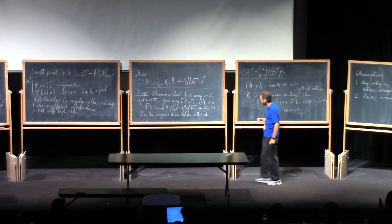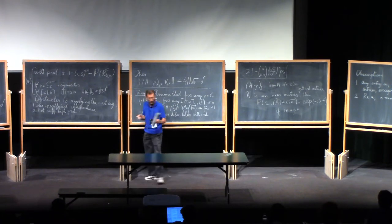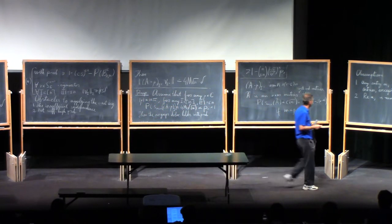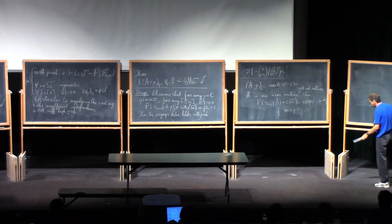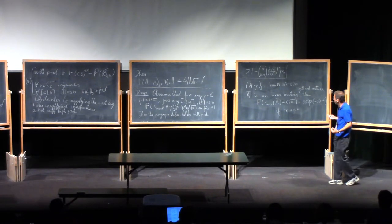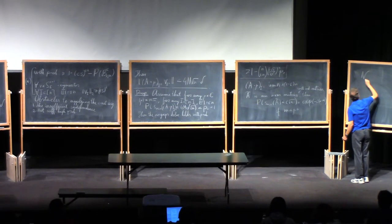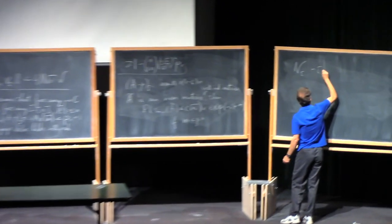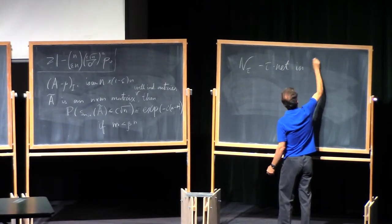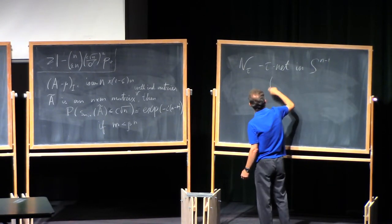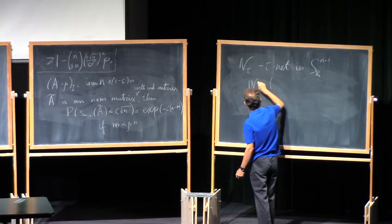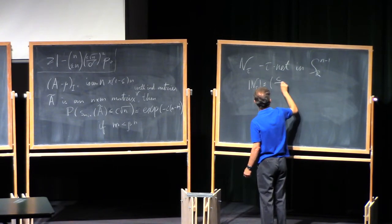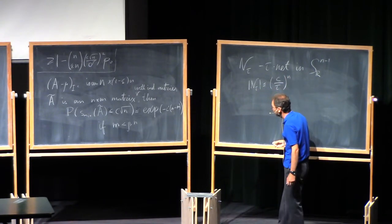And to describe it, let me recall the main feature of the epsilon net argument. We run the small ball probability against the cardinality of the net. That means that we discretize the unit sphere. And if N_tau is the tau net in the unit sphere, then the cardinality of N_tau is bounded by a constant over tau to the power n.